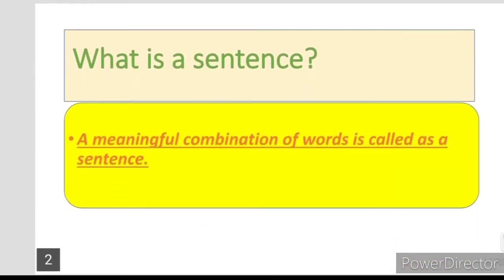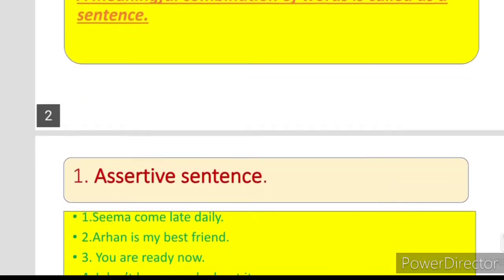What is a sentence? Sentence kya hota hai? A meaningful combination of words is called as a sentence. Alphaz ka ba-maani-majmah ae. Now let's see that sentence is kuan kuanse hai?